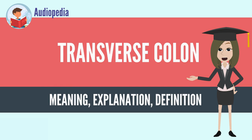The transverse colon is the longest and most movable part of the colon. It crosses the abdomen from the ascending colon at the hepatic or right colic flexure with a downward convexity to the descending colon, where it curves sharply on itself beneath the lower end of the spleen, forming the splenic or left colic flexure. In its course, it describes an arch, the concavity of which is directed backward and a little upward.